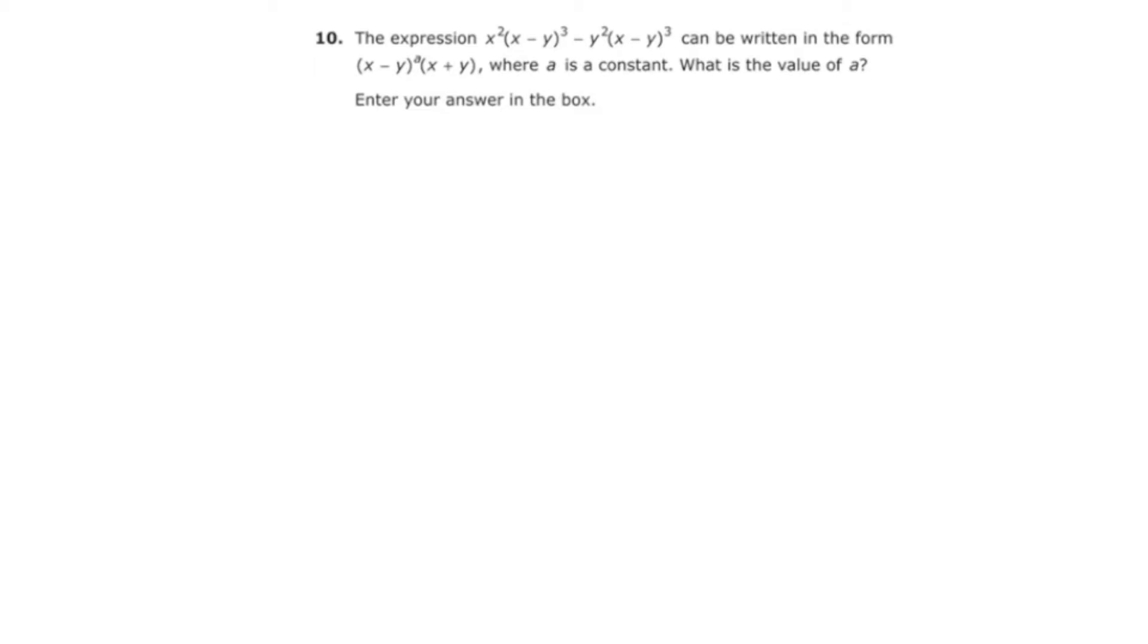This question states that the expression x squared times x minus y quantity cubed minus y squared times the quantity x minus y quantity cubed can be written in this other form, where a is constant. What is the value of a?